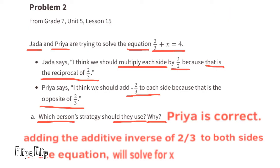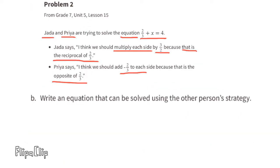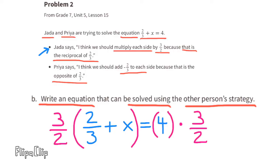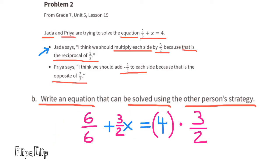Priya is correct because adding the additive inverse of two-thirds to both sides solves for x. For part b, we need to write an equation that can be solved using Jada's strategy. I'll keep the original equation: two-thirds plus x equals four. Let's test Jada's strategy — multiply each side by three halves. On the left: three halves times two-thirds plus three halves times x equals three halves times two-thirds, which is one, plus three halves times x.